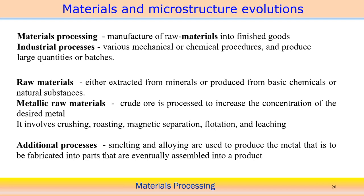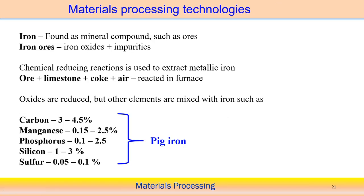When converting from iron ore to steel or cast iron, we need to perform additional operations. Iron is found as a mineral compound such as an ore. Iron ore is basically a combination of iron oxides with many impurities. We need to separate these impurities through different processing. We also need to follow chemical reducing reactions just to extract the metallic iron.